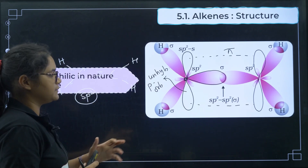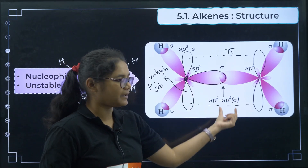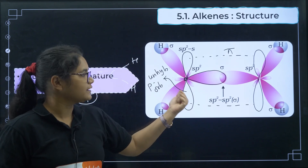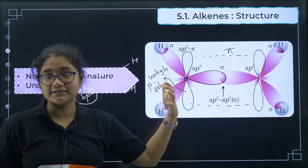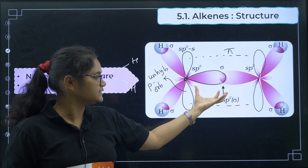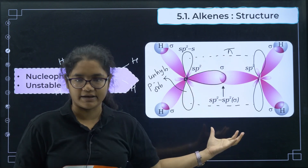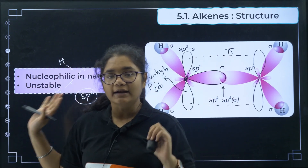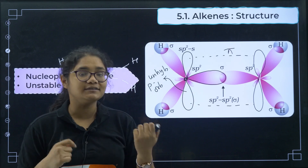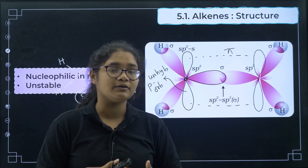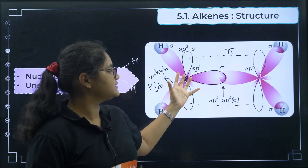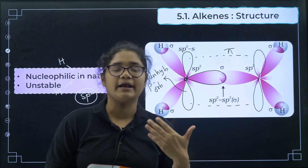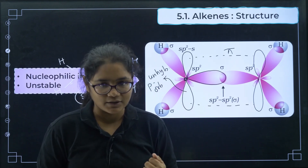Pi bonds are loosely bound electrons. That is why alkenes are rich in electrons — these electrons are available, so they are nucleophilic in nature. They are also unstable, and due to this instability, alkenes can react with hydrogen or other reagents to get converted to alkanes.